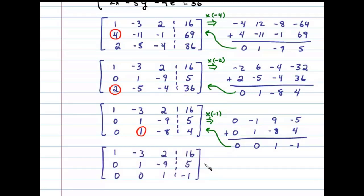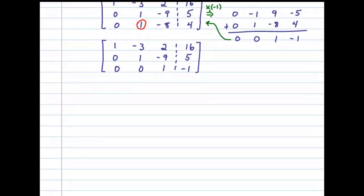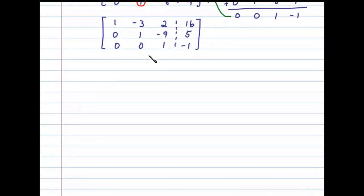And this leaves us with an equivalent matrix in upper triangular form. Now let's convert that back to a linear system and then solve by back substitution. And in this case, we know right away that z equals negative 1.